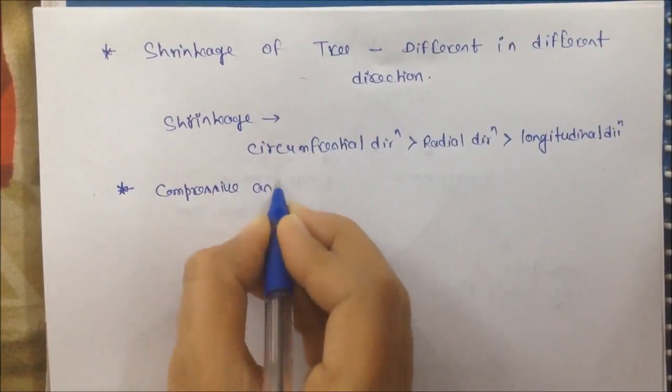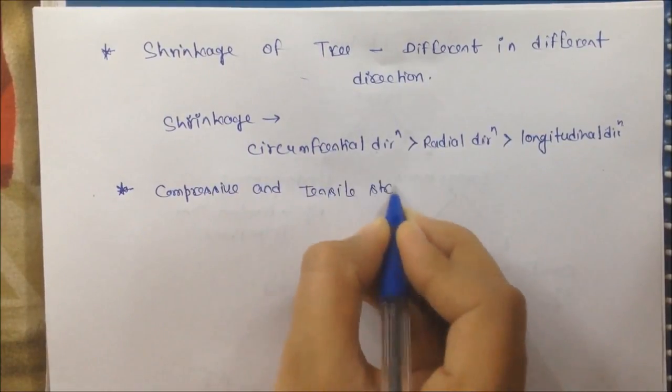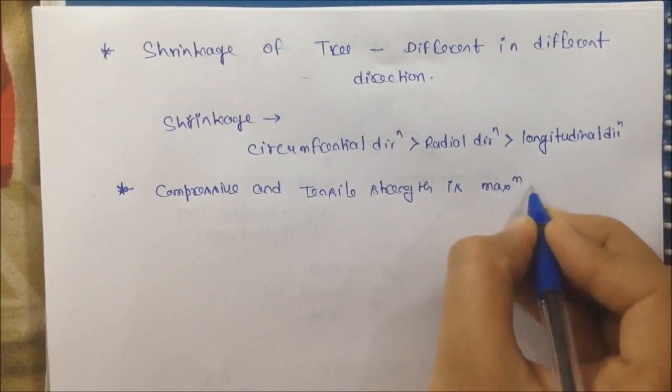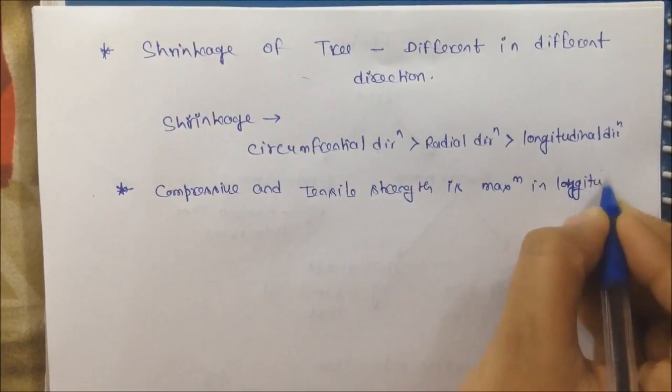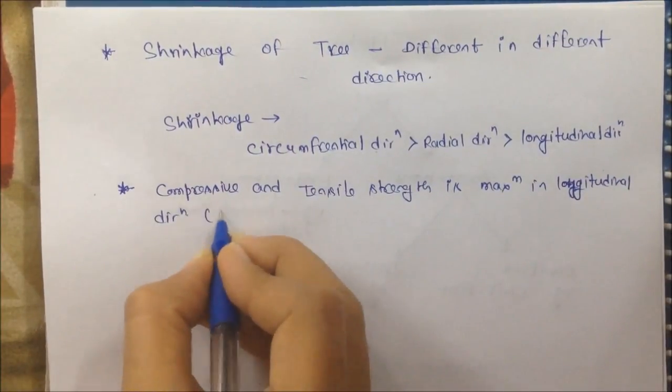Second property is strength. Compressive strength and tensile strength is maximum in the longitudinal direction. And tensile strength is 2 to 4 times of compressive strength.